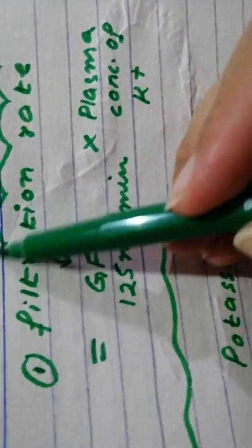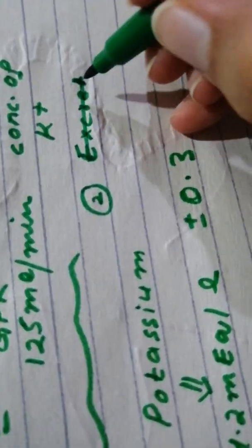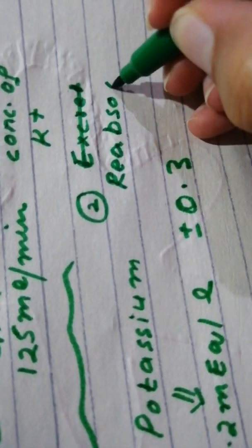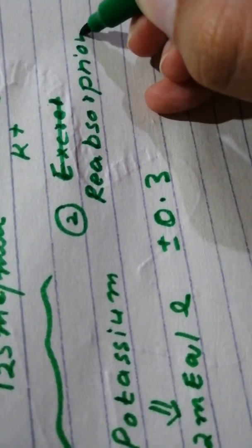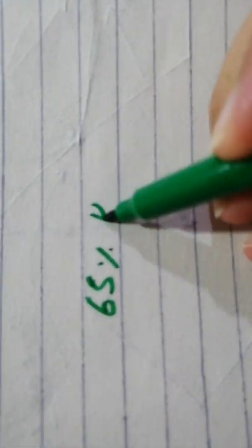Filtration rate is not something you need to be considering much - it is more or less constant. Then the question comes to reabsorption and secretion. You can see 65% of potassium filtered load is absorbed in the PCT, and this isn't something subject to variation - it is a fixed proportion absorbed in PCT.